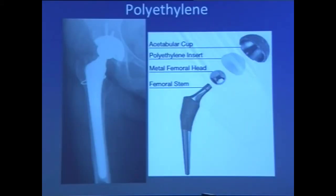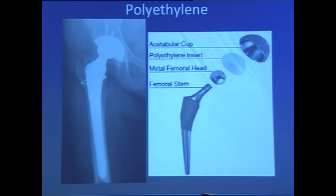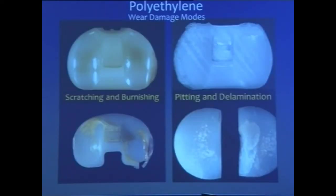Moving on to polyethylene — you know about the acetabular cup, the polyethylene insert, the metal femoral head, and the femoral stem. Every implant removed at our institution must by law be submitted to the Department of Pathology. We examine it for burnishing, erosion, etc., and then submit it to the Department of Biomechanics, which is a leading department making custom prostheses. To show you wear damage — this is a good polyethylene tibial insert taken from the package — and the terms we use are scratching, burnishing, pitting, and delamination.